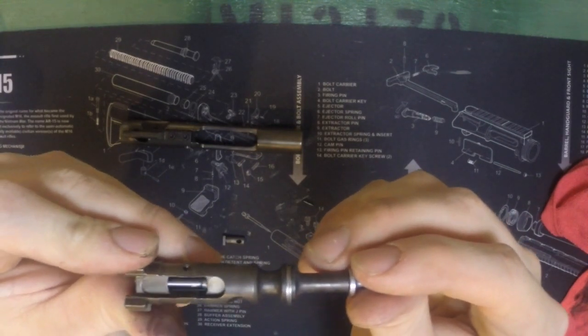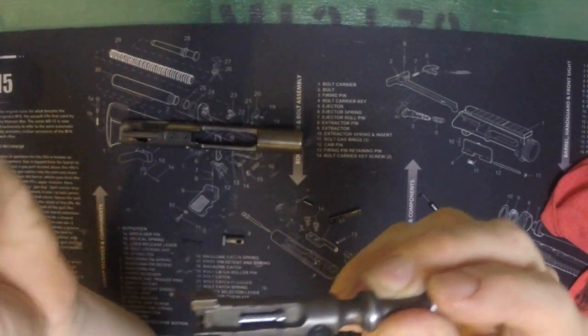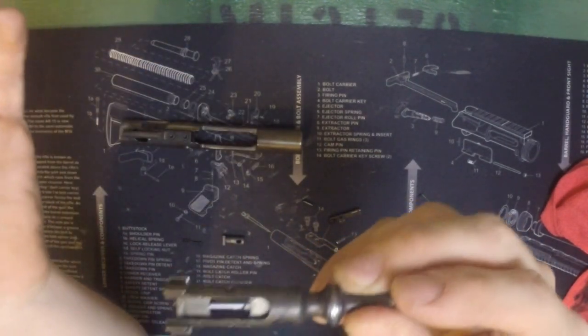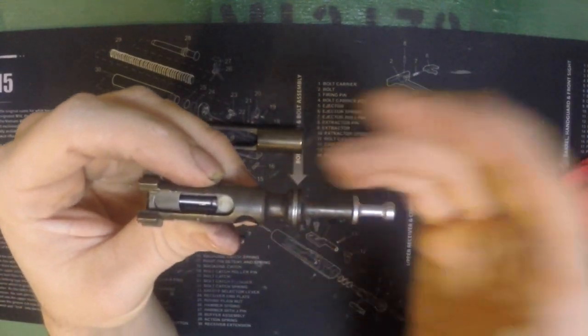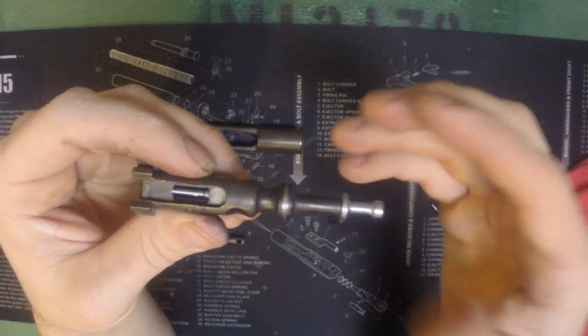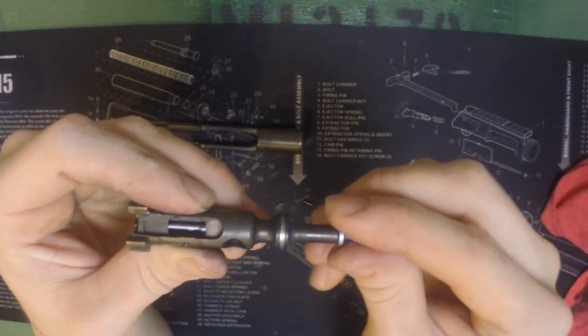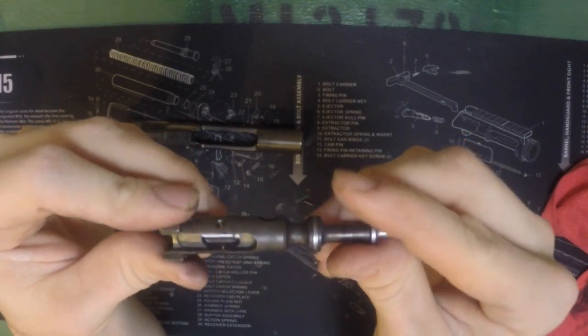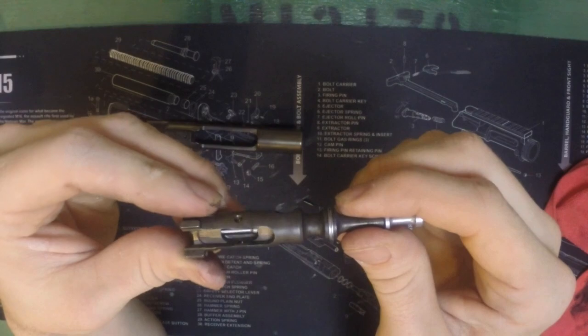If there's a ton of carbon buildup inside of this or gunk or excess lubricant that doesn't need to be there, you're basically asking for problems down the road. Now granted, this firing pin stays in there and it doesn't move very much—it only moves a little bit, so it's not really something that is probably going to cause a jam unless your weapon's ridiculously dirty.